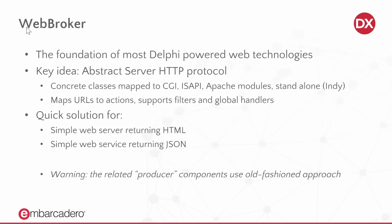All of your code can move as-is from Linux to Windows, from ISAPI to CGI to a web module without significant change — save for the project file. The other concept around Web Broker is that it maps URLs to actions. For each action you can determine the HTTP verbs implemented and provide a specific content type in the result. It also supports filters and global handlers. Web Broker still comes with some producer components that are fairly old-fashioned, so I'm not going to focus on them.